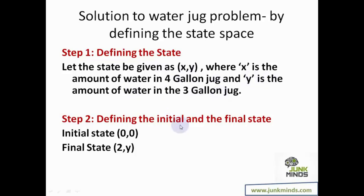I'll also define the initial and final states. The initial state is two empty jugs. The final state is two gallons of water in the four gallon jug — we don't care about the three gallon jug at that point. But we can't just give the initial and final state and expect the system to generate the result; we also need to give it information about the jugs.